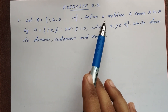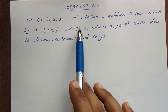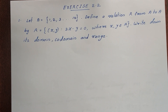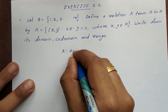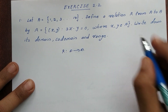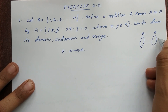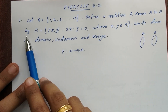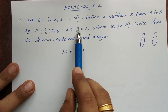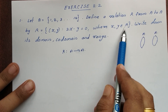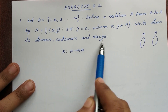So this is Exercise 2.2, first question. Let A be the set {1, 2, 3, ... up to 14}. Define a relation R from A to A by R equal to the set of all ordered pairs (x, y) such that 3x minus y equals 0, where x, y belong to A. Write down the domain, co-domain, and range.